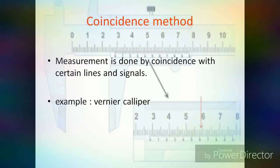Next is the Coincidence Method. It is a differential method of measurement in which a very small difference between the measured quantity and the reference is determined by the observation of coincidence between certain lines or signals. Example: measurement by vernier caliper, where the vernier scale reading is found by using the coincidence between the vernier scale and the main scale reading.